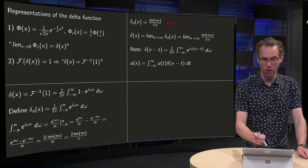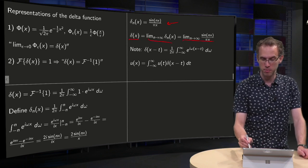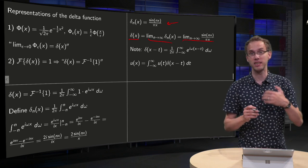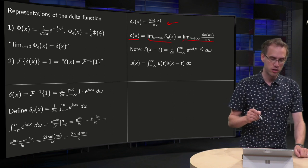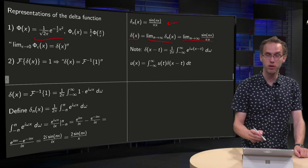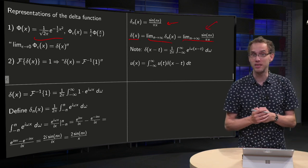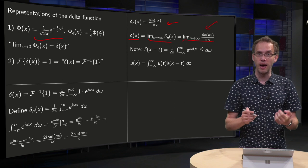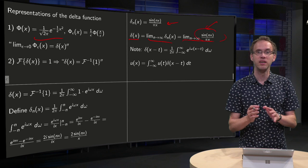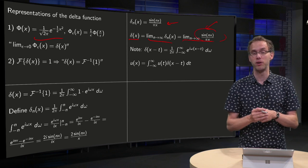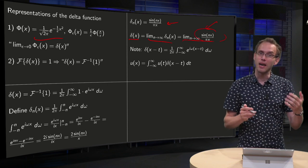So your delta function would become a limit n to infinity of δ_n(x) equals limit n to infinity of sine nx over πx. And this is called another representation of the delta function. So, we have the first one over here with the Gaussian, and here we have a second way to represent the delta function. And again, this is a bit tricky, because if you take n to infinity, it isn't a function anymore. Well, of course it isn't, because the delta function isn't a real function as well.